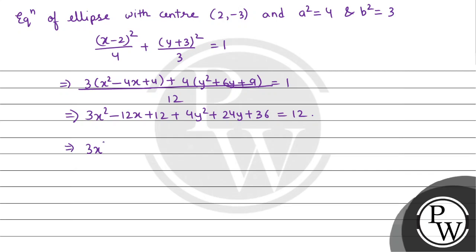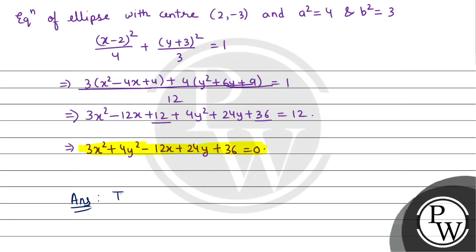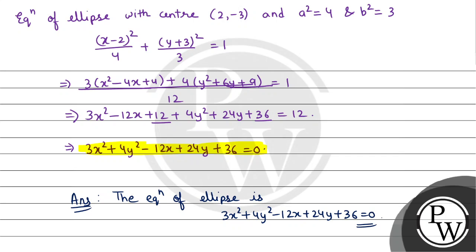So we can write: 3x² + 4y² - 12x + 24y + 12 + 36 - 12 = 0, which simplifies to 3x² + 4y² - 12x + 24y + 36 = 0. So this is the required equation of the ellipse. Hope you understood it well, best of luck.